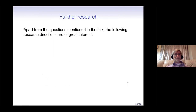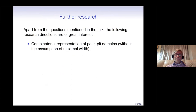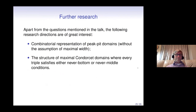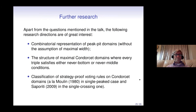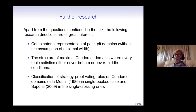Open questions deserving further study: (1) combinatorial representation of PP domains without the maximal width assumption; (2) structure of maximal Condorcet domains where every triple satisfies either never-bottom or never-middle; (3) classification of strategy-proof voting rules on Condorcet domains — this is a large separate topic, done by Moulin for single-peaked preferences and by Saporiti for single-crossing preferences.